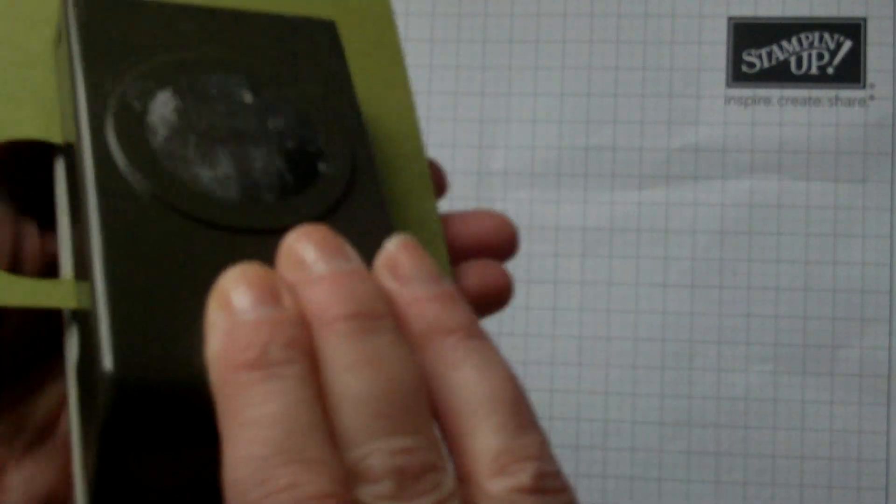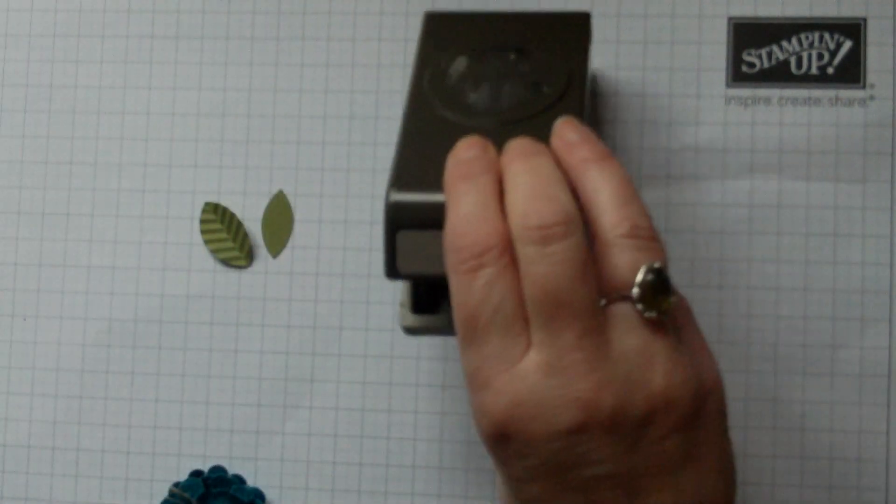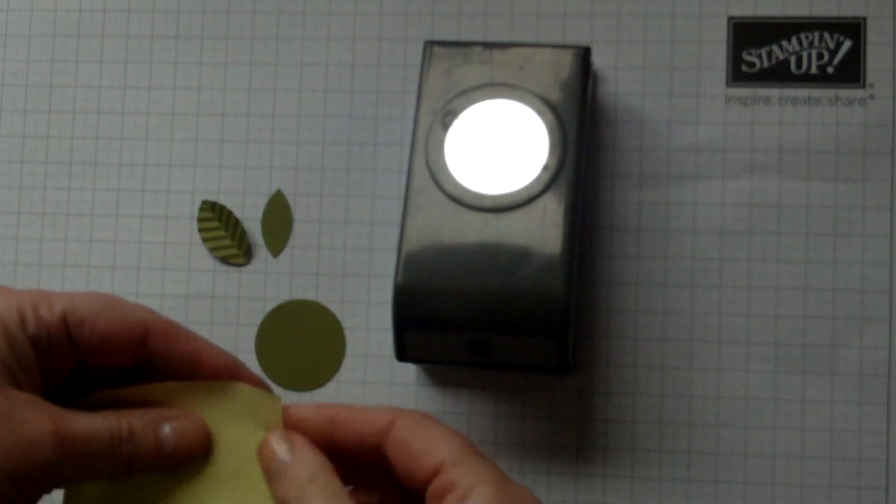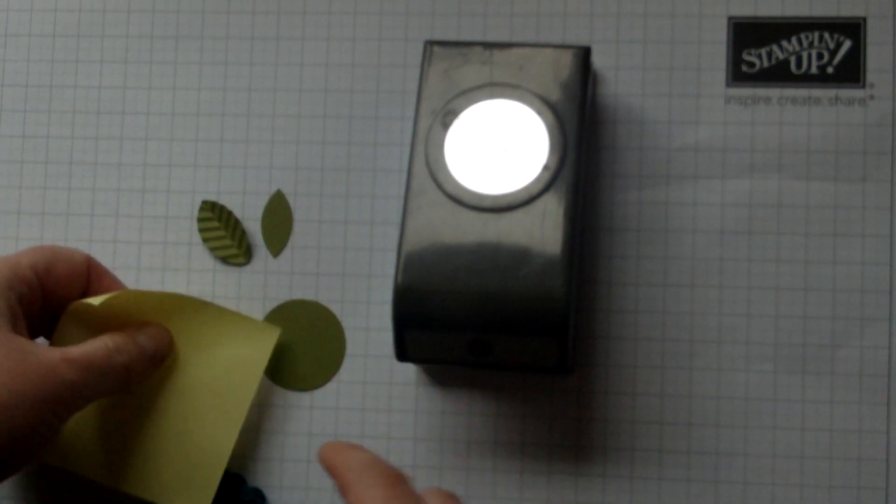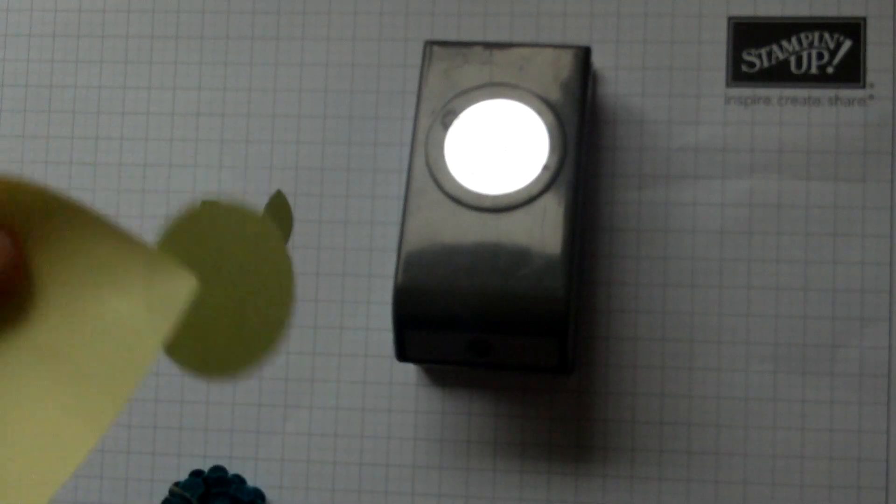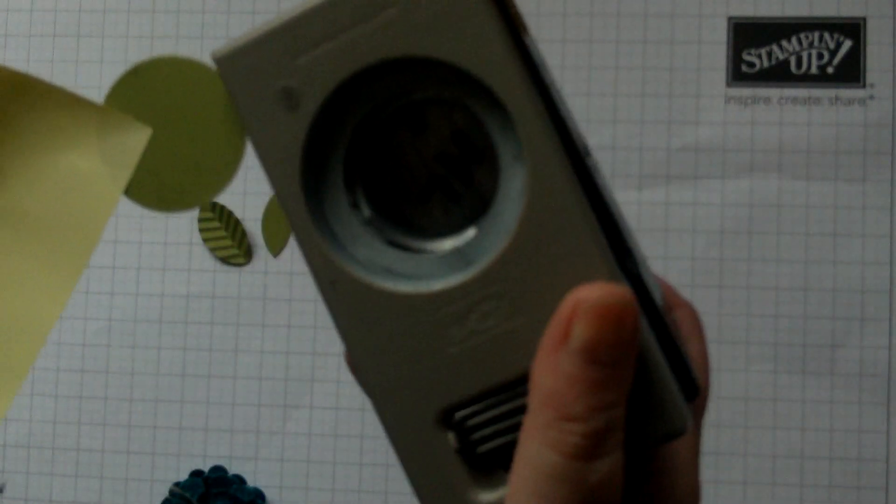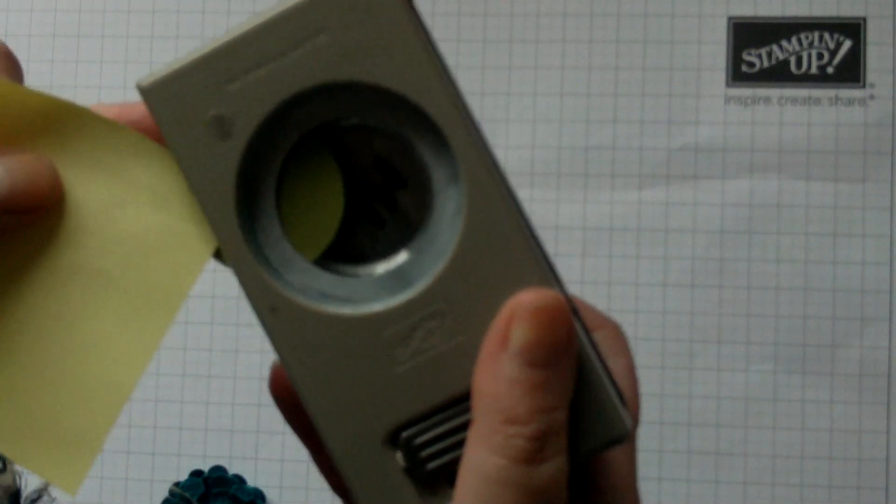You just want to punch out a circle and then what you want to do is grab a post-it note and on the sticky piece, this is the sticky edge, just create a little handle with it which just makes it really easy to feed into your punch.